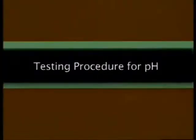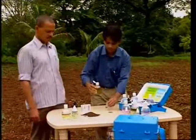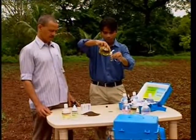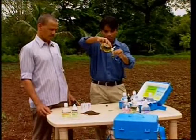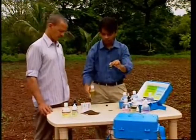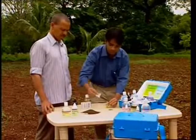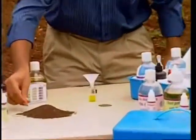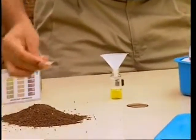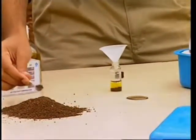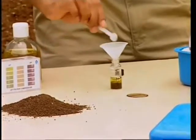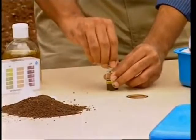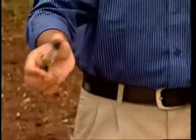Testing procedure for pH. Take 5 ml of pH1 reagent in a glass bottle. Add 2 grams of soil sample to it with the help of a funnel and the 1 gram spoon. Put the cap and mix the contents by inverting the bottle slowly for a minute.